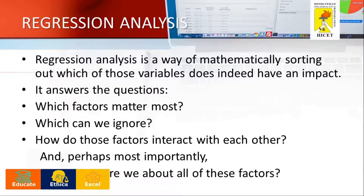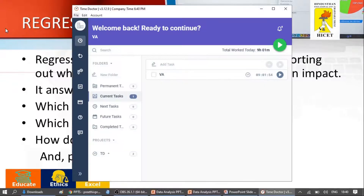Regression analysis uses historical data to understand how a dependent variable's value is affected when one or more independent variables change or stay the same. By understanding each variable's relationship and how they developed in the past, you can anticipate possible outcomes and make better decisions.